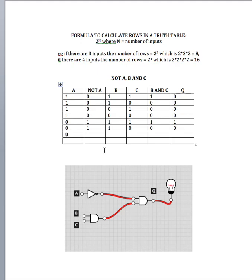Turn A OFF, B OFF, but C ON. Because A is flipped, the NOT output is 1. That's the same as the row above, so the output there is 0 — giving us Q as 0. Then with all inputs OFF: NOT A output is 1, but B and C are both 0, so we've got an input of 1 and 0 to our AND gate, which turns it OFF.